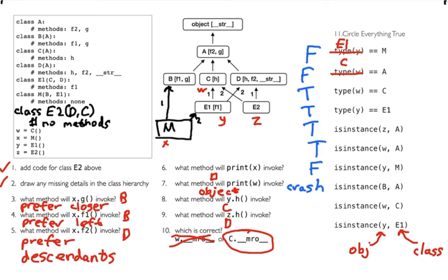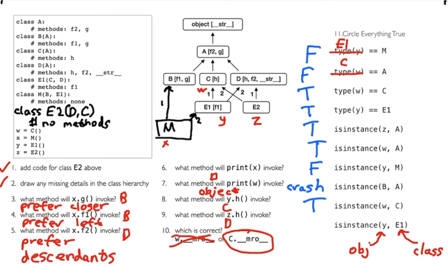isinstance(W, C): W is right there, and if the type of W equals C, then isinstance(W, C) is definitely also true — isinstance accepts more kinds of relationships. So that's absolutely true. And is Y an instance of E1? That's the same thing — also definitely true.